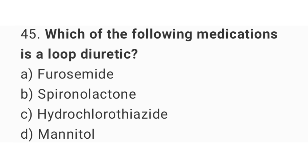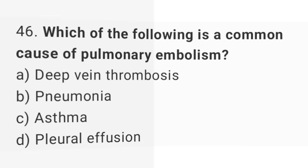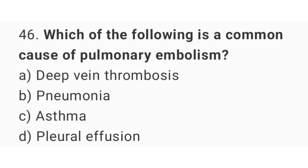Question 45. Which of the following medications is a loop diuretic? Question 46. The right answer is option A: deep vein thrombosis.